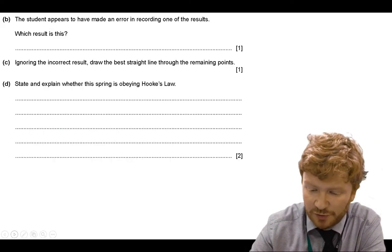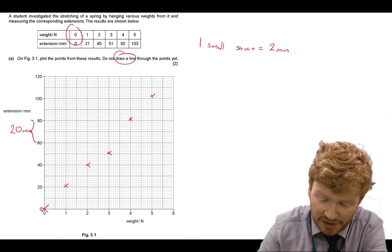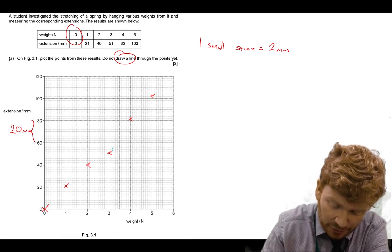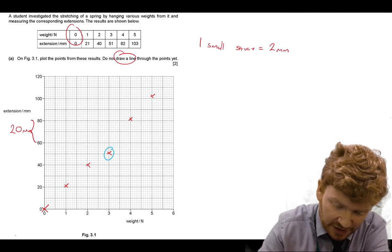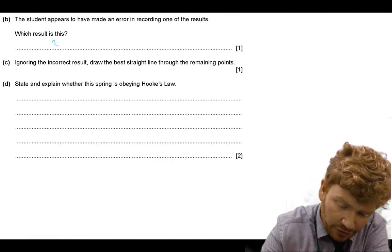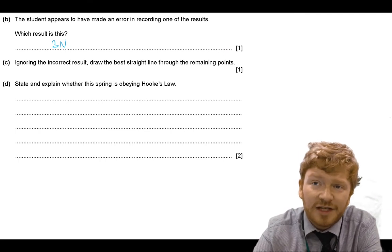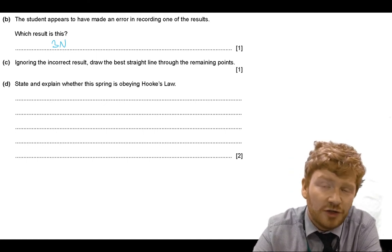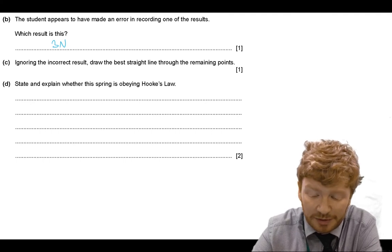Don't draw a line of best fit yet. A student appears to have an error in recording their results — which one has the error? Looking at them, they're all lying in a perfectly nice straight line apart from one. You need to identify it as the 3 Newton one. Quite a lot of you just wrote 'three,' but that's not good enough — we need to know exactly which result we're talking about.